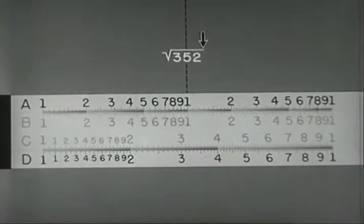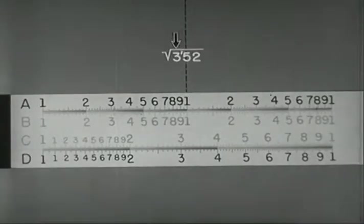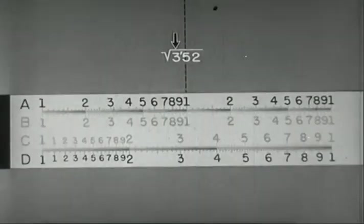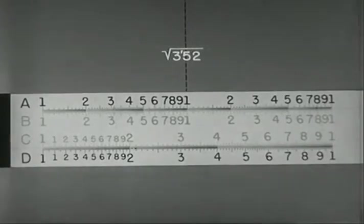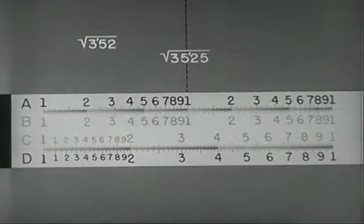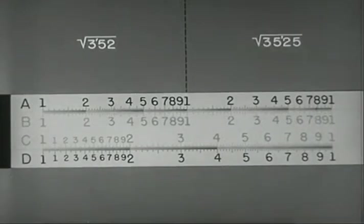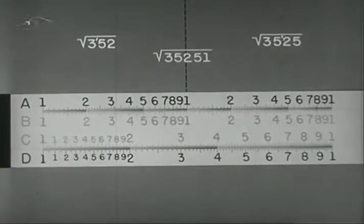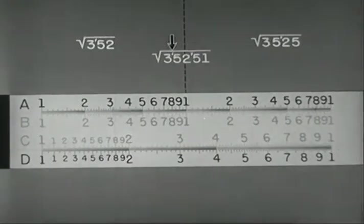With numbers of more than two digits, mark off in pairs from right to left. Here, a single digit remains to the left of the mark. Use the left side. With this number, two digits remain to the left of the mark. Use the right half. With this number, use the left half.